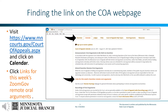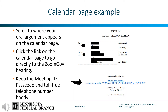This link is updated each Friday for the following week's remote oral arguments. Click 'Links for this week's ZoomGov Remote Oral Arguments.' This will take you to the Calendar pages for the upcoming week's oral arguments. All oral arguments heard on a morning's calendar before a single panel of judges will be in one ZoomGov session — there is not a separate Zoom session for each oral argument. Scroll to the page where your case is listed, and near the middle of the page will be the ZoomGov link that will bring you into the ZoomGov session. Click that link.